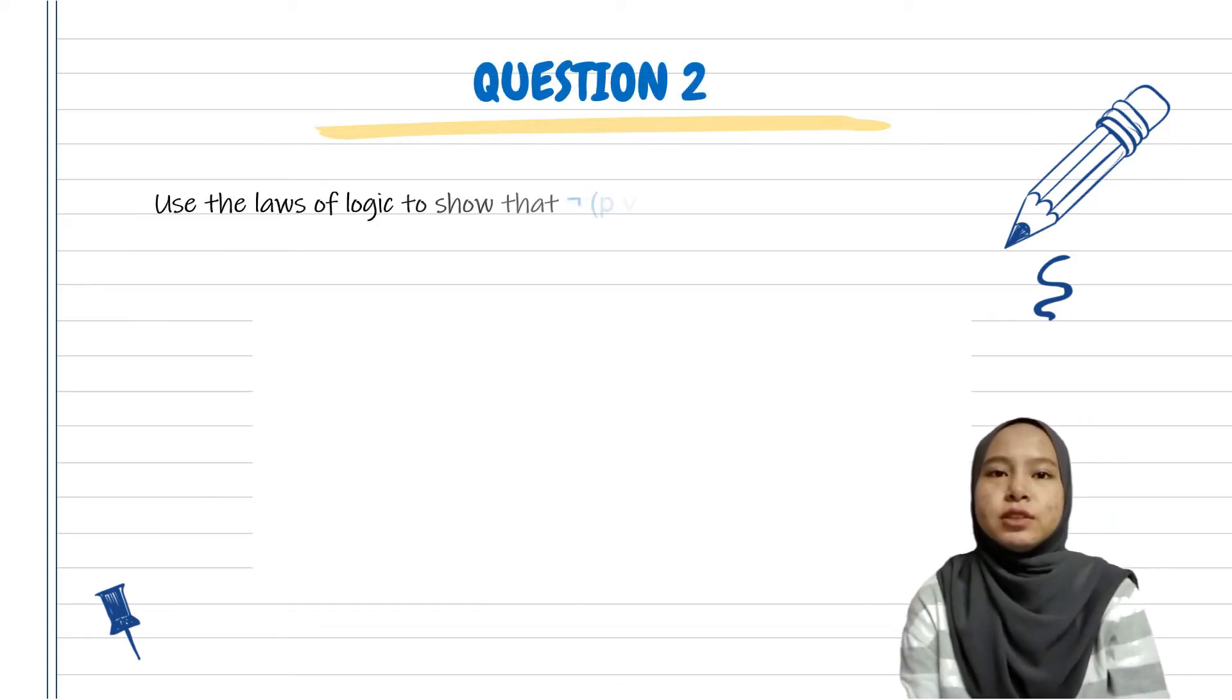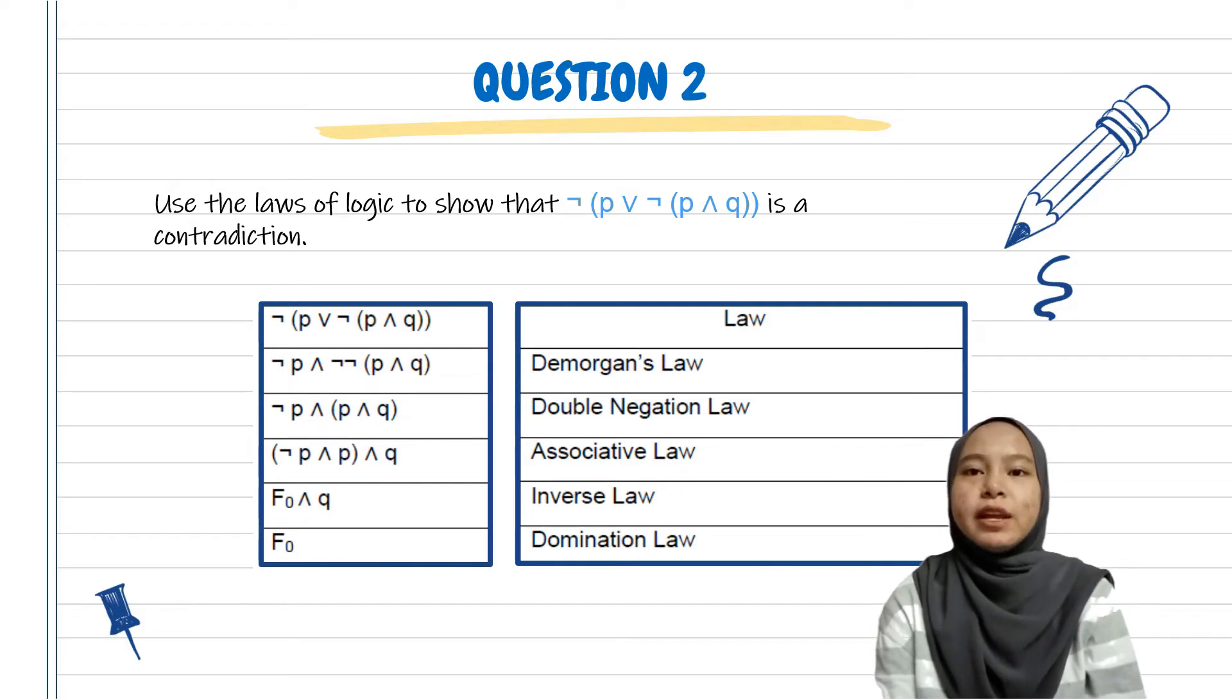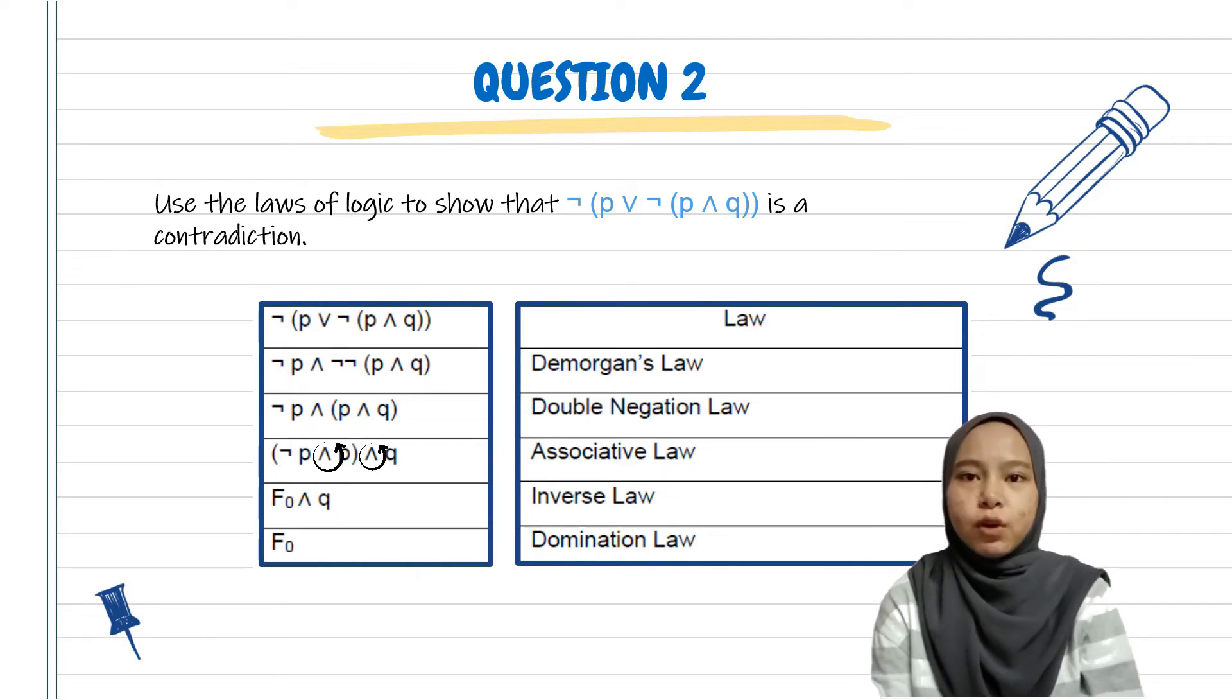Let's continue to the next question. Question two: use the laws of logic to show that NOT P OR NOT(P AND Q) is a contradiction. From the statement, we can use De Morgan's Law and get NOT P AND NOT(NOT P AND Q). From that we can see it has two NOTs, so we can use Double Negation Law and get NOT P AND (P AND Q). Next, we can use Associative Law and get (NOT P AND P) AND Q. Then we can use Inverse Law and get F AND Q. And from that we can use Domination Law and get F. So it shows that the statement is a contradiction.